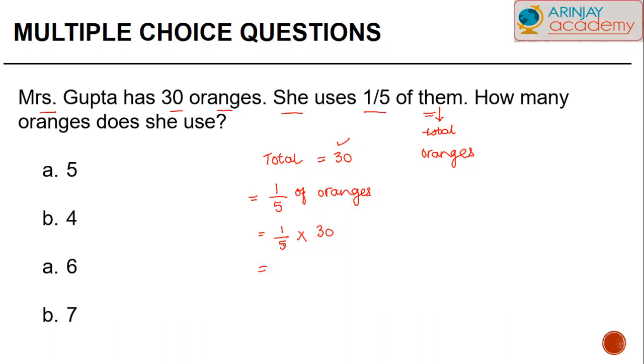When you divide 30 by 5, what will you get? 5 times 6 is 30. 6 into 1 is equal to 6. So, the correct answer here is 6.